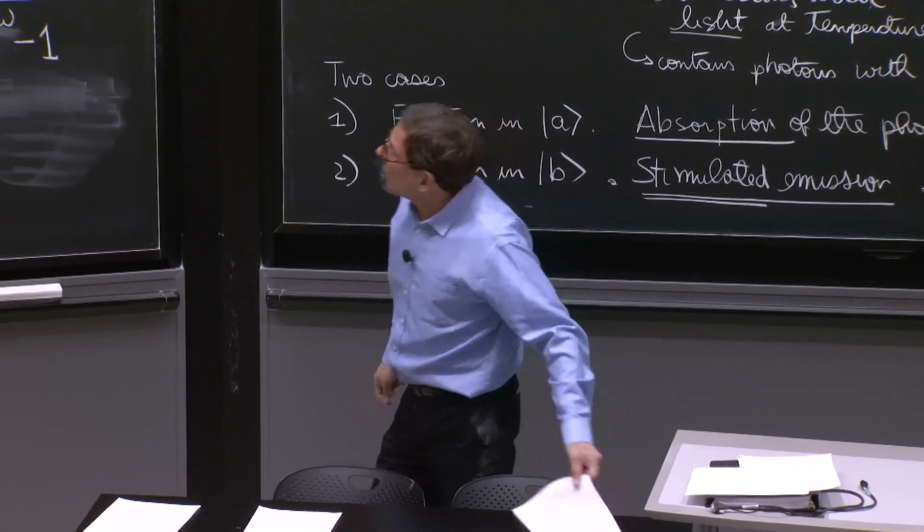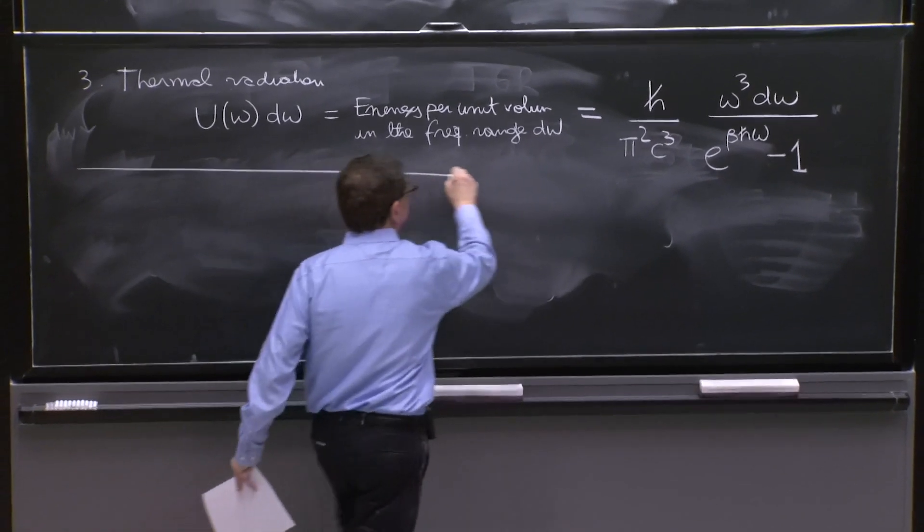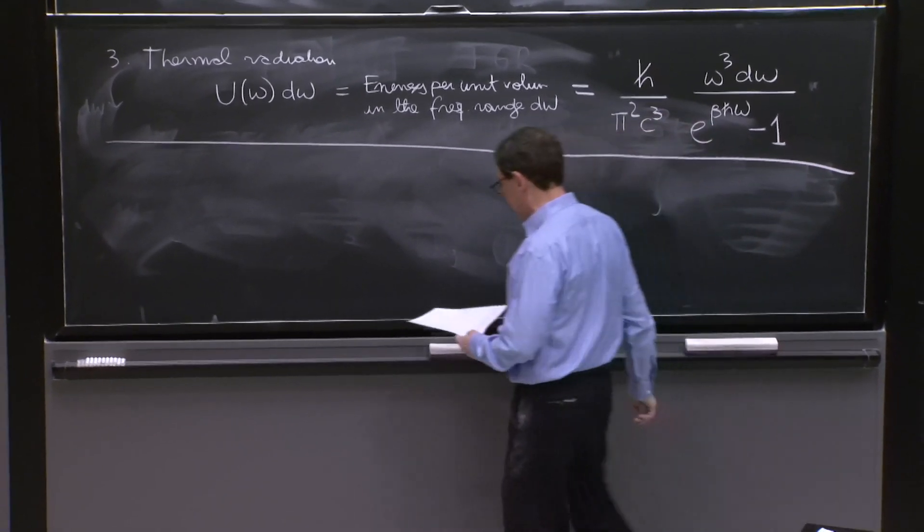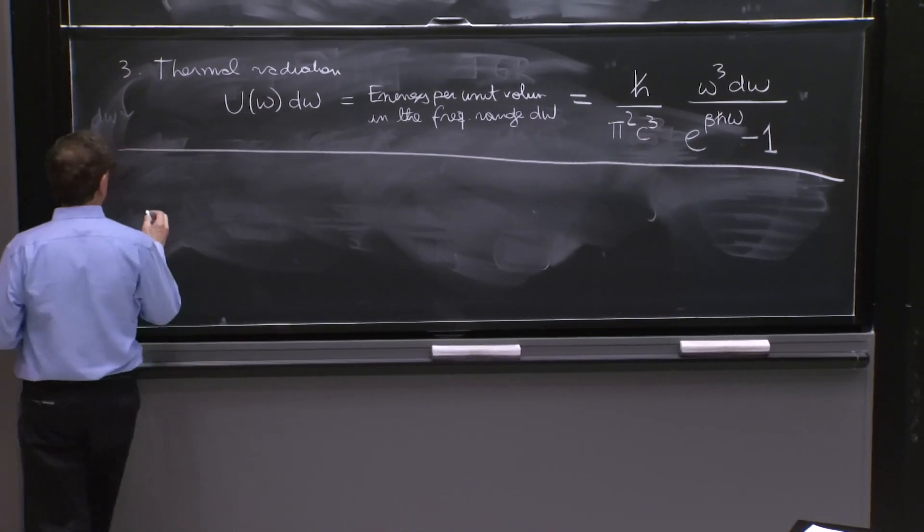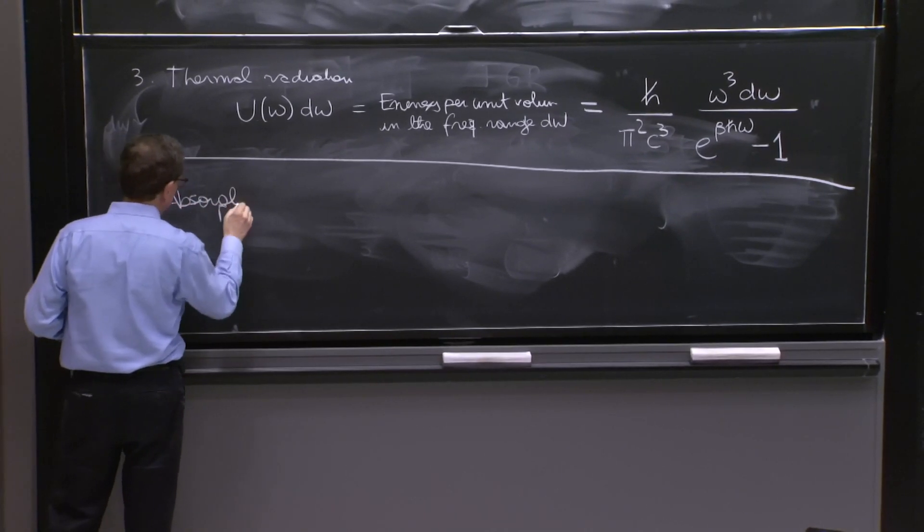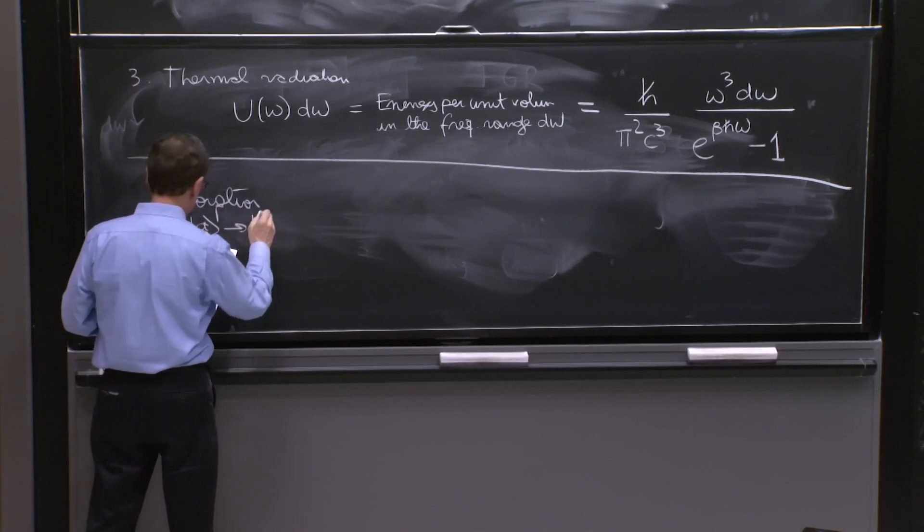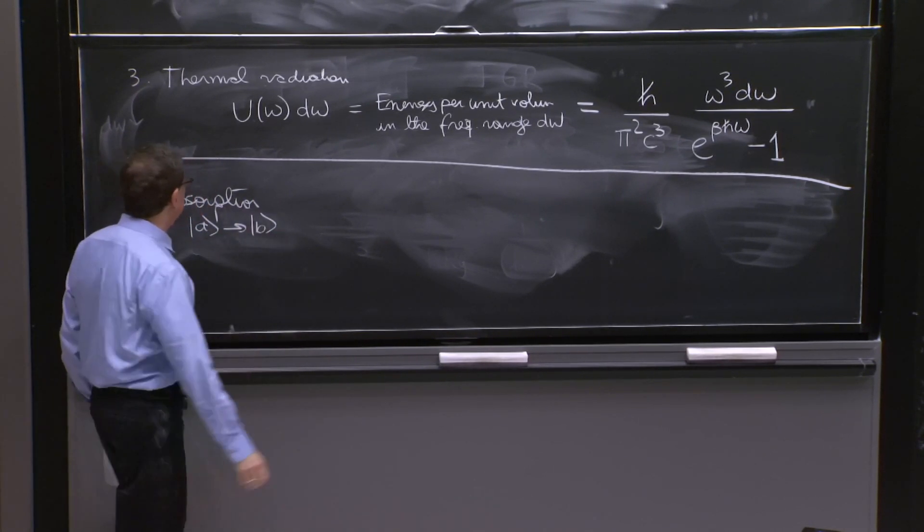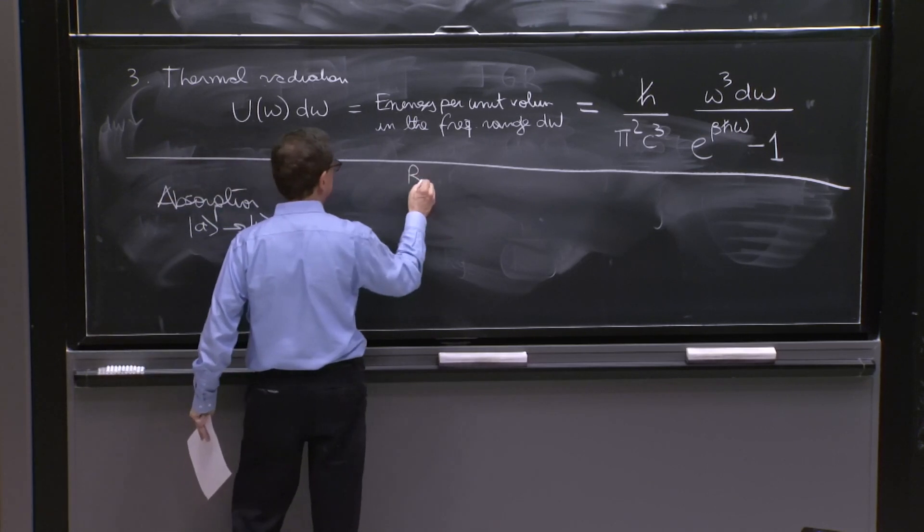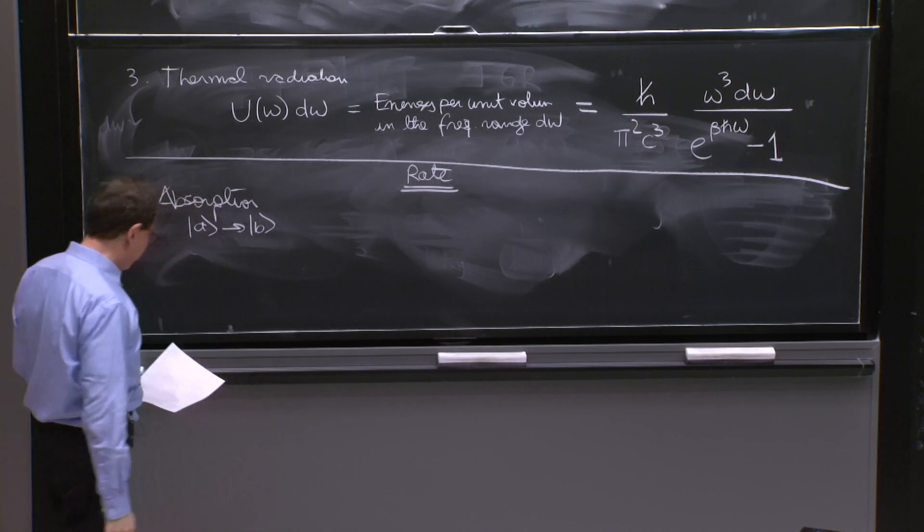What do we do? We have to consider the possible processes. So our processes are absorption, and in this case we go from A to B. And let's try to write a rate for them.